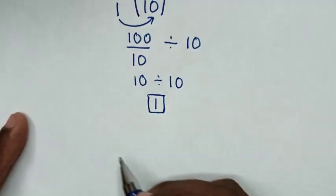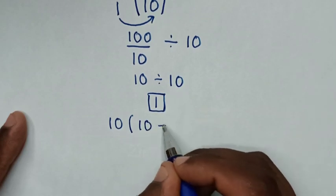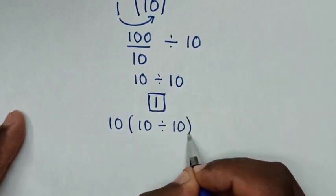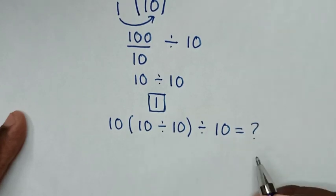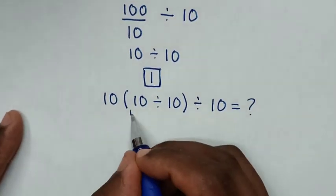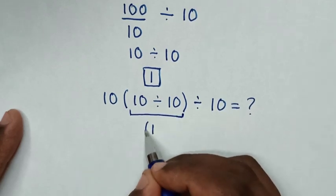Or in another method, from our problem, 10(10 divided by 10) divided by 10. So we start with here inside the bracket. 10 divided by 10 is 1. Bracket.